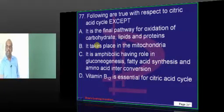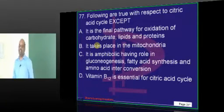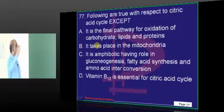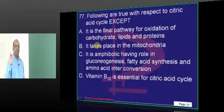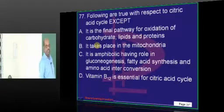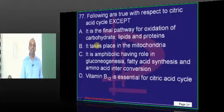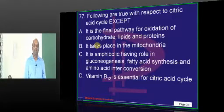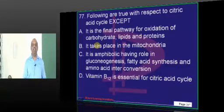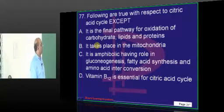The citric acid cycle is one of the topmost priority topics in biochemistry. Do you need vitamin B12 for any of the enzymes in the citric acid cycle? Which enzyme requires vitamin B12? In the citric acid cycle, they are all oxidases, reductases, or kinases at most.